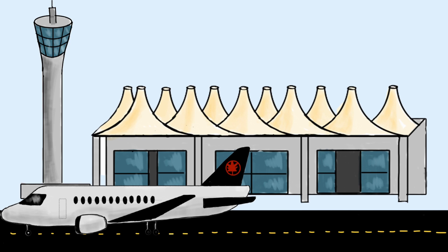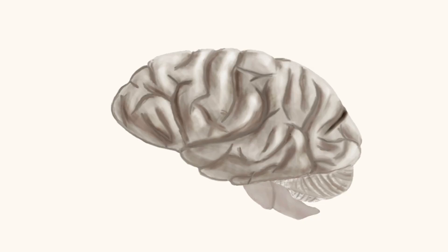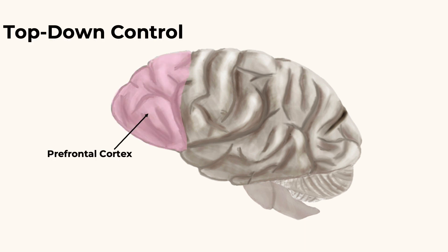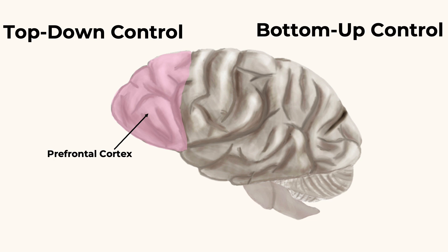For understanding the neuroscience of attention, attention can be broken down into two types: top-down and bottom-up. Top-down involves conscious control from higher cognitive areas such as the prefrontal cortex — this would be used to search a flight board for the gate of your flight.